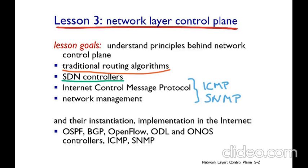SNMP is used for having knowledge of the elements that compose the network. There is a centralized element that gathers information from the other elements in the network — for example, we want to know the state of the router, the link, and the link load — in a similar way that the SDN controller does for an SDN network.